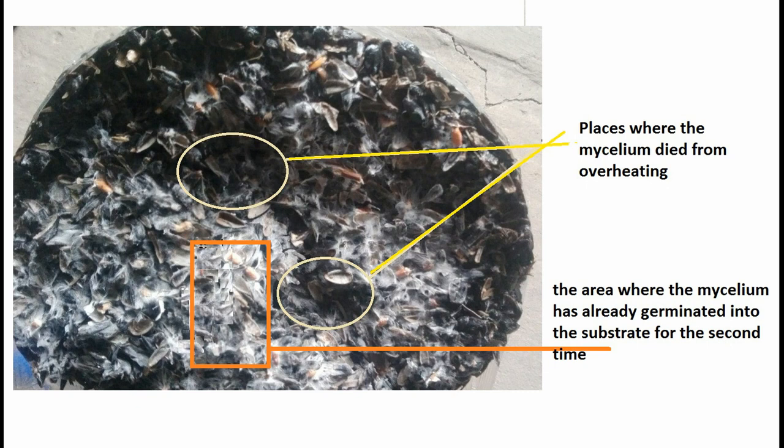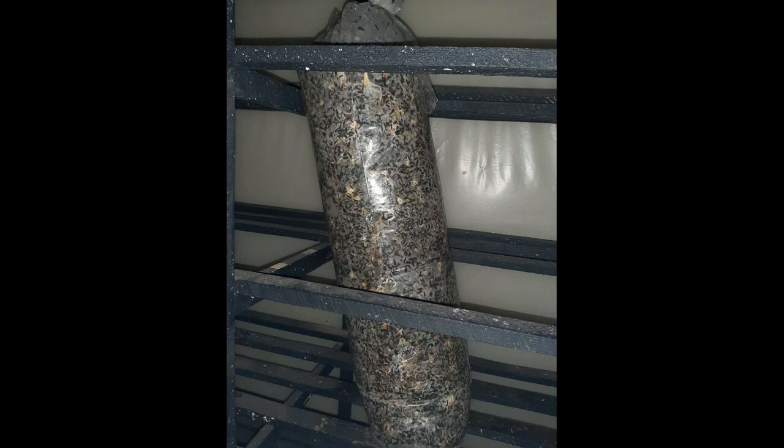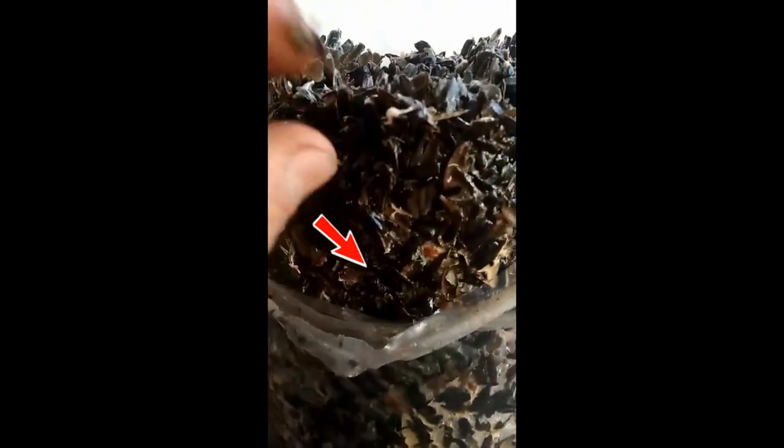Unfortunately, many mushroom growers lower the temperature in the room too sharply — for example, they turn on a fan that brings too cold air from outside, or they turn on the air conditioner set to a low temperature. They think this will be better and the mycelium will not have time to die. However, now these mushroom growers face another problem: water condenses between the film and substrate due to rapid cooling.